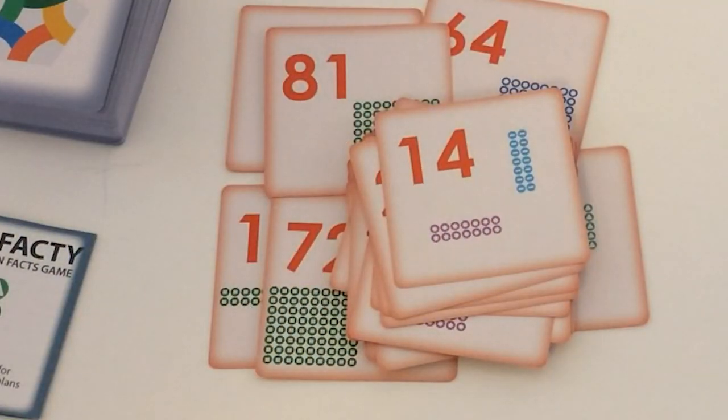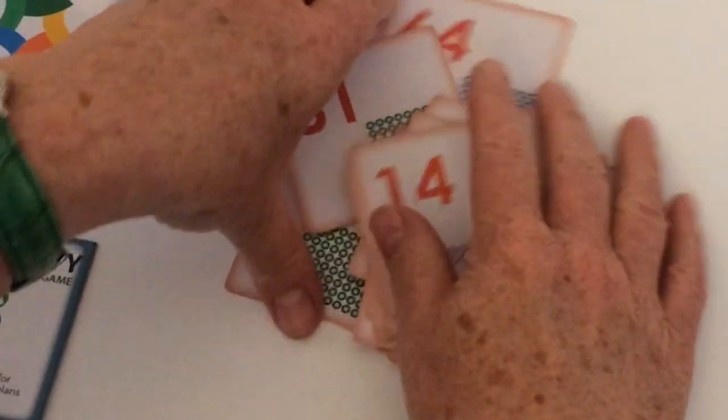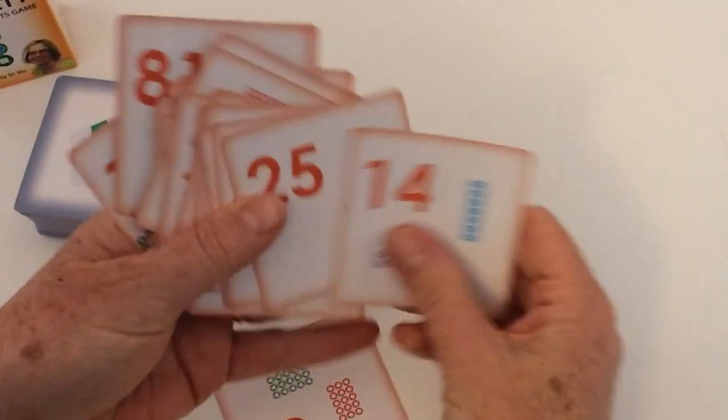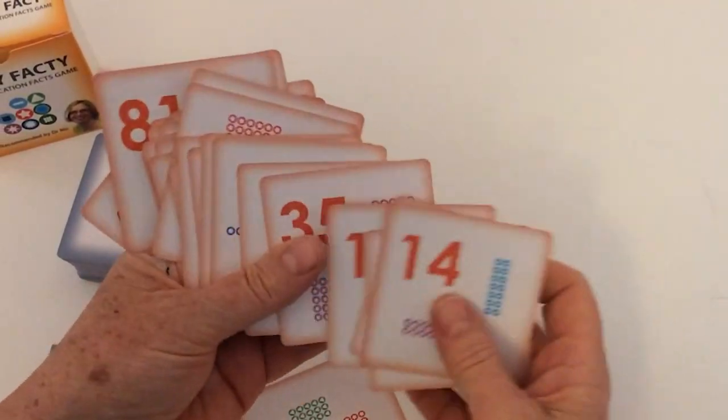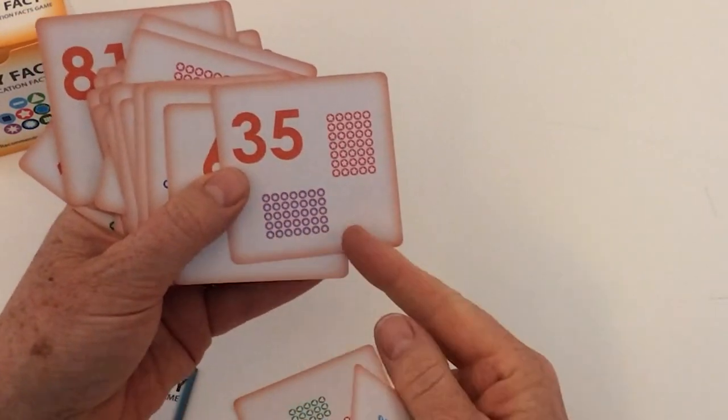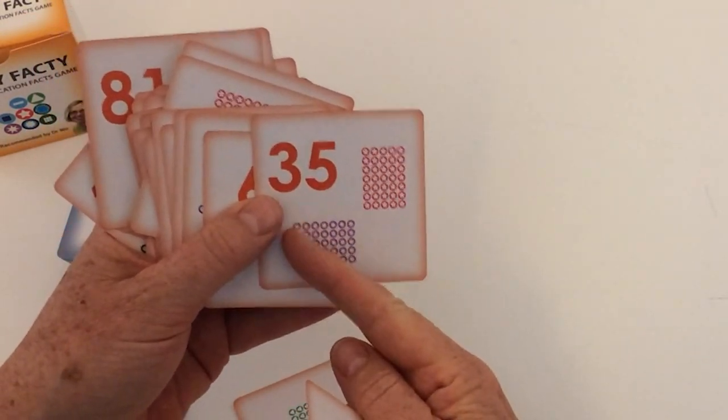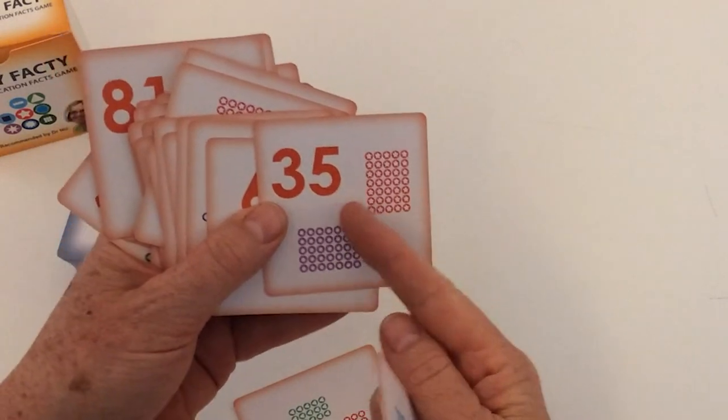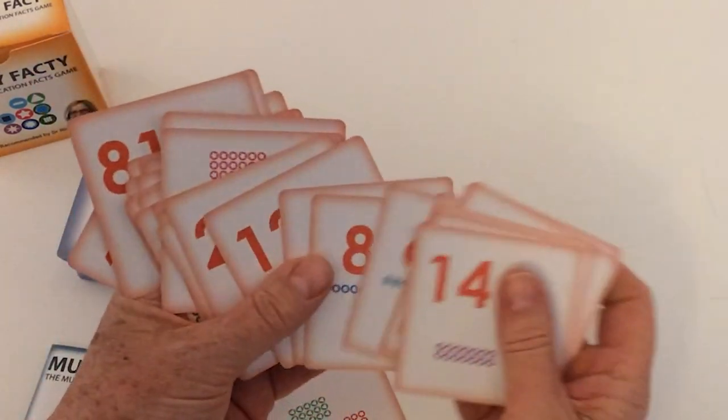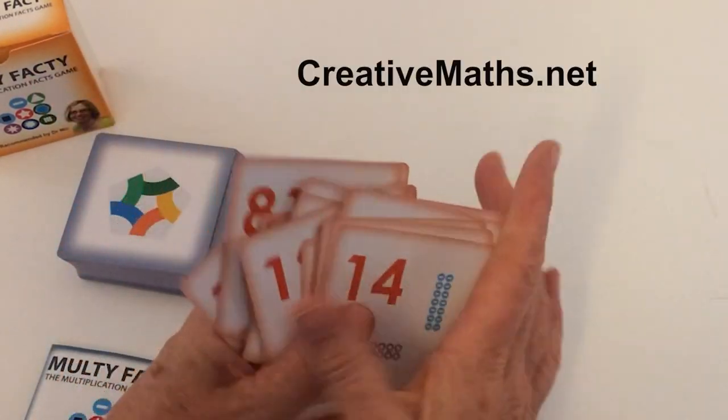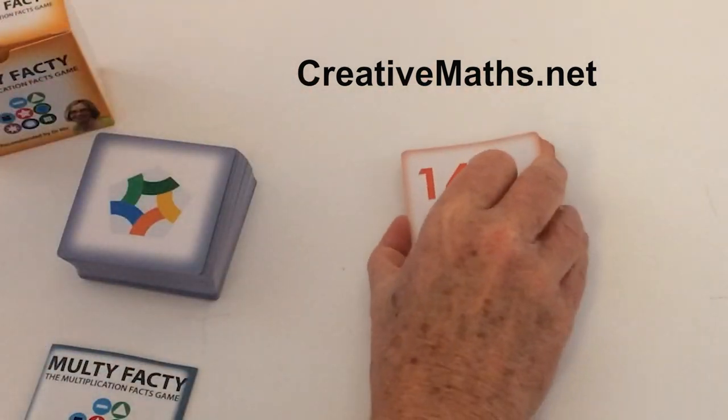Now with just these multiple cards there are quite a few interesting activities that you can do as a teacher. Getting them to sort them and look at the different shapes shows the commutative properties. Five rows of seven is the same as seven rows of five and so on. You can look on our website for some ideas about activities to use those. So those are the multiple cards.